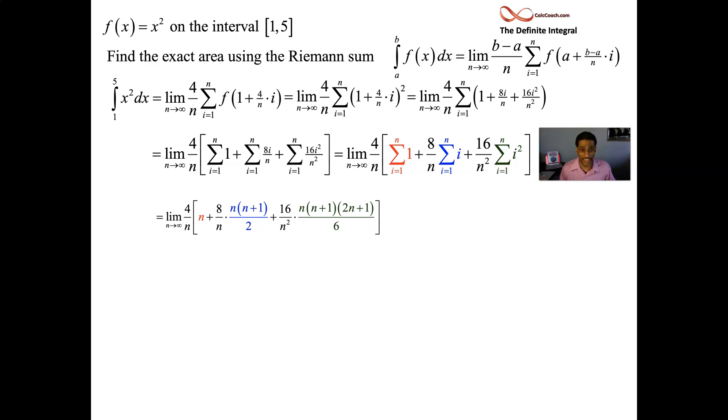We're almost done. Let's put that four over n back in. We have four over n times n, that's just four. Four over n times eight over n is 32 over n squared times n times n plus one over two. And finally, 64 over n cubed times the cubic formula.